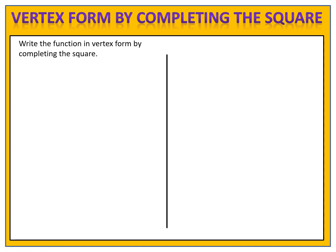Now we've made it through the first example — it'll probably take a few more before you start feeling comfortable. Let's go through another example: write the function in vertex form by completing the square. Here's the function: f of x equals x squared plus 10x plus 3.